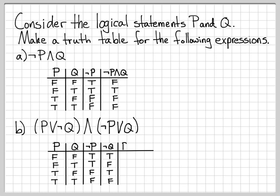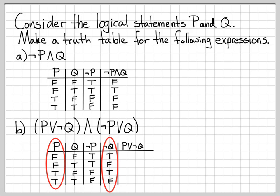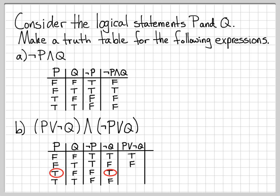The next thing I need is a column for 'P or not Q'. To fill this in, I look at the P column and OR it with the 'not Q' column. The first entry is F or T, which is true. Next is F or F, which gives false. Then true or true gives true. And true or false gives true again. So now I have a column for this part of my logical expression.